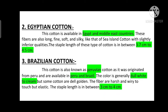The third one is Brazilian cotton. This cotton is also known as Peruvian cotton, as it was originated from Peru, and is available in Peru and Brazil. The color is generally dull white to cream, but some cottons are dull golden.